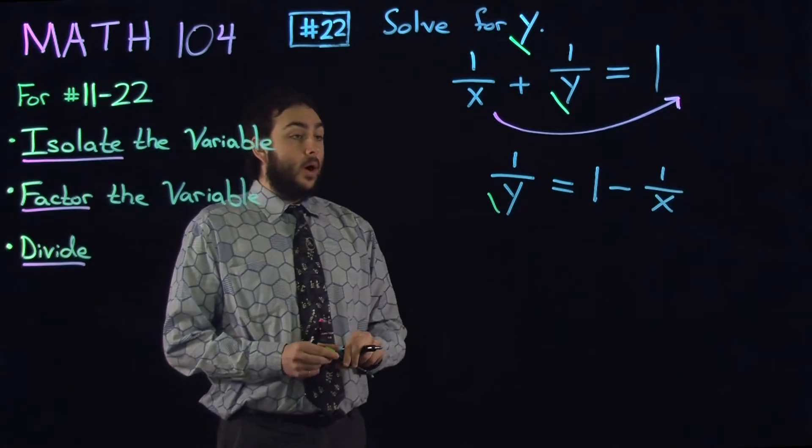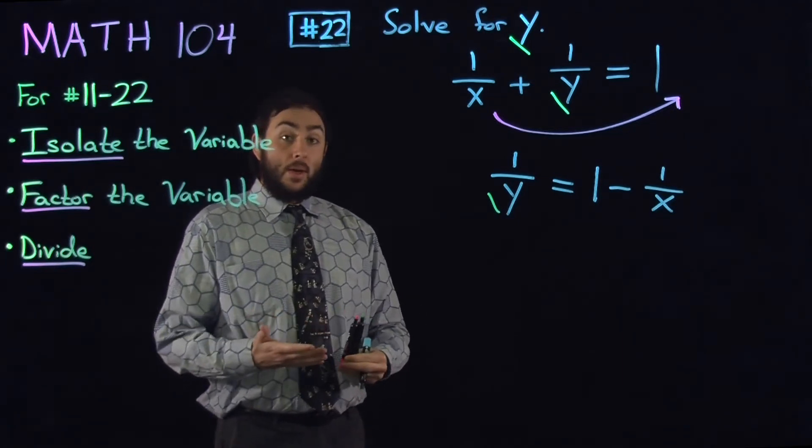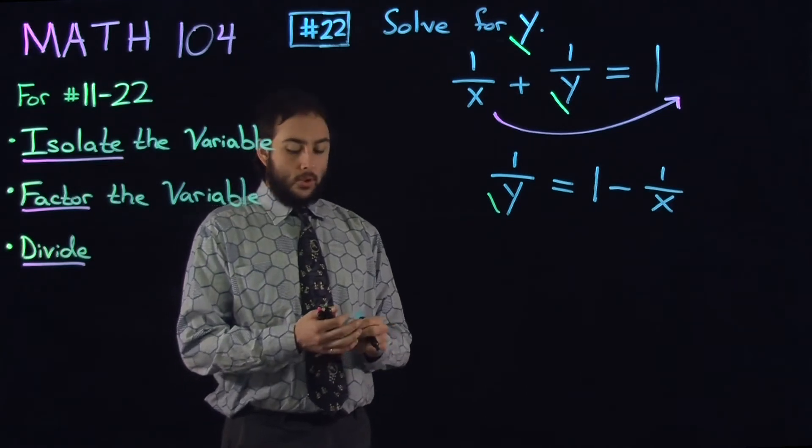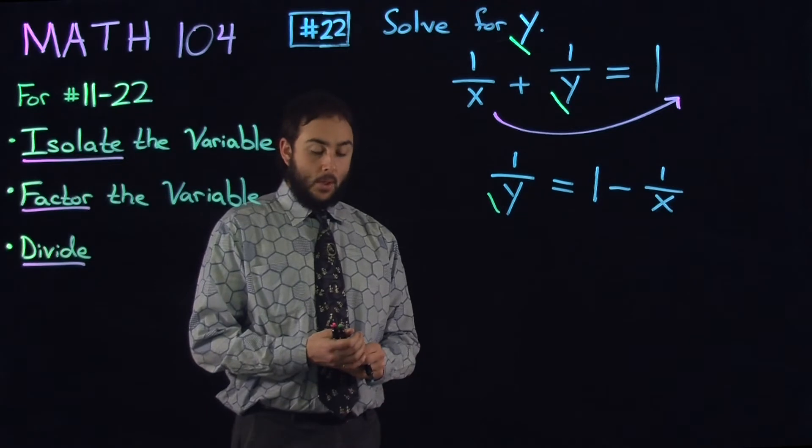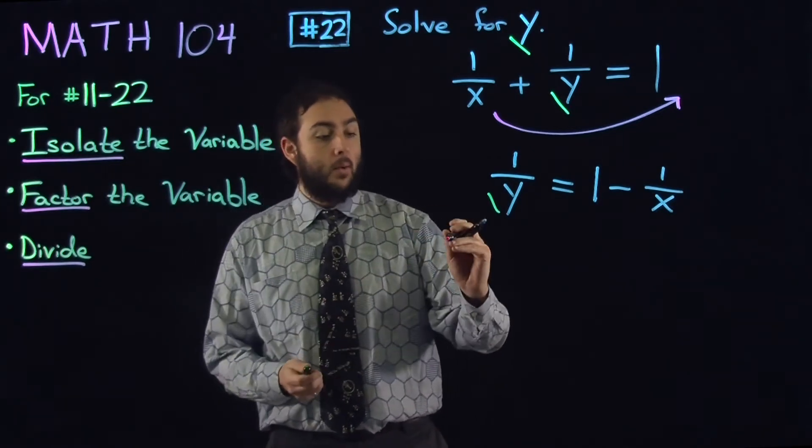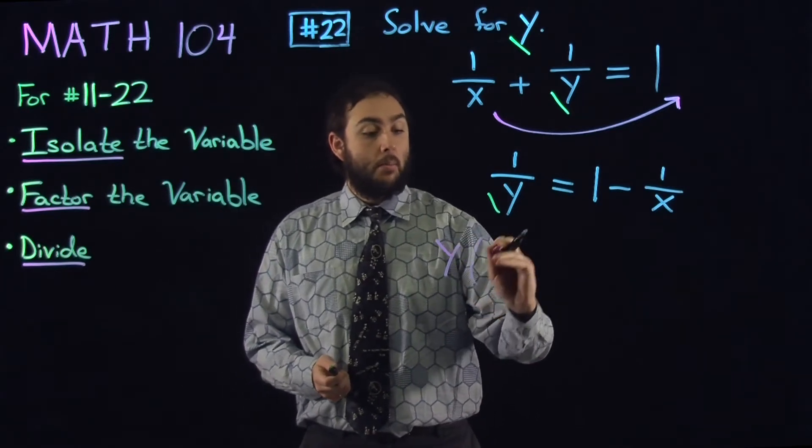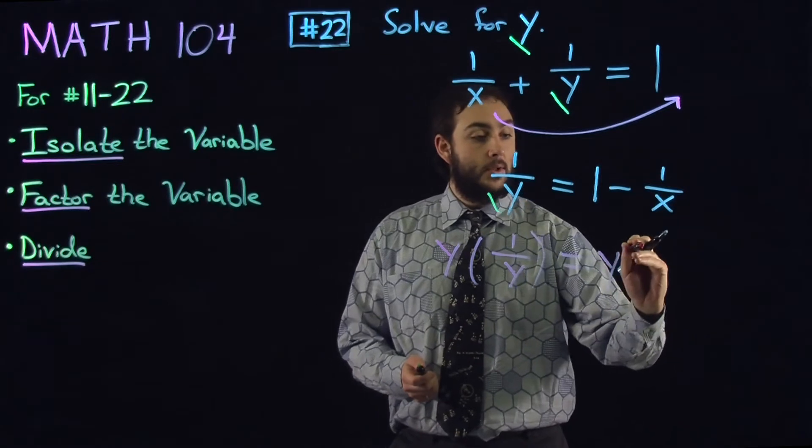Next, what we are going to do is, since y is in the denominator, it might help to multiply both sides of the equation by y. So what would happen if we did that? Here, I'm going to multiply y to both sides of this equation.